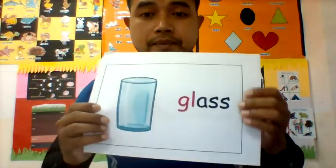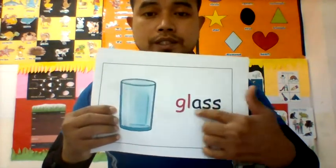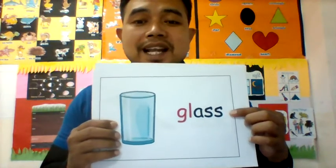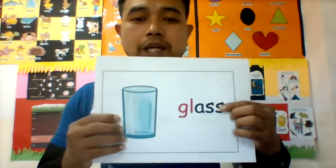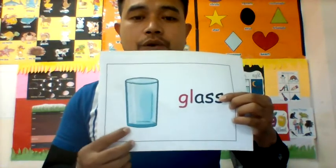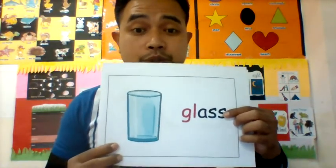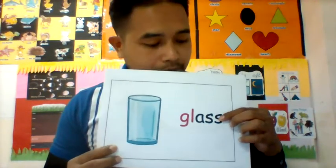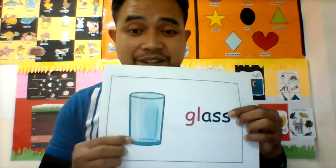Look at this image here. Look at the words — can everyone say glass? Well done. So a glass — what can we use a glass for? We use it to fill up water, fill up liquid drinks for us to drink, right? And remember, a glass is really fragile — it can break easily.